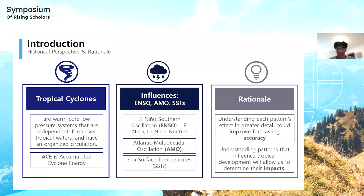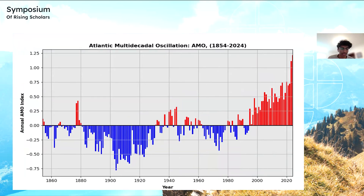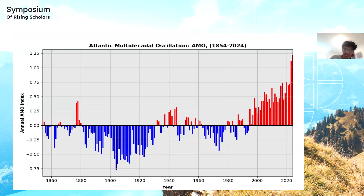Next is the Atlantic Multidecadal Oscillation, which is another index I investigated. It's basically an index that gives you the anomaly of sea surface temperatures in the North Atlantic Ocean compared to the global sea surface temperature. In the plot, you can see that from around 1970 to 1990, for most years we were below average. And on the right, you can see above average anomalies with a very sharp increase in the past two years. Attributed to this warm phase, we've seen more intense and frequent hurricanes.